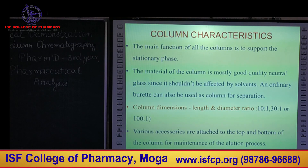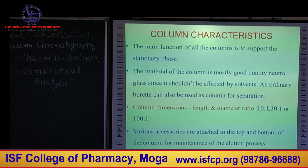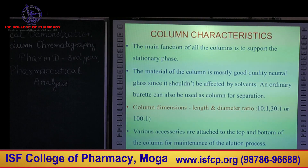Next are the column characteristics. The main function of all columns is to support the stationary phase. The columns are generally made up of glass, which is non-reactive. A burette can also serve as a column for the separation. The column dimensions — length to diameter ratio — should be 10:1, 30:1, or 100:1. Various accessories can be attached at the bottom or top of the column for maintenance of the elution process.